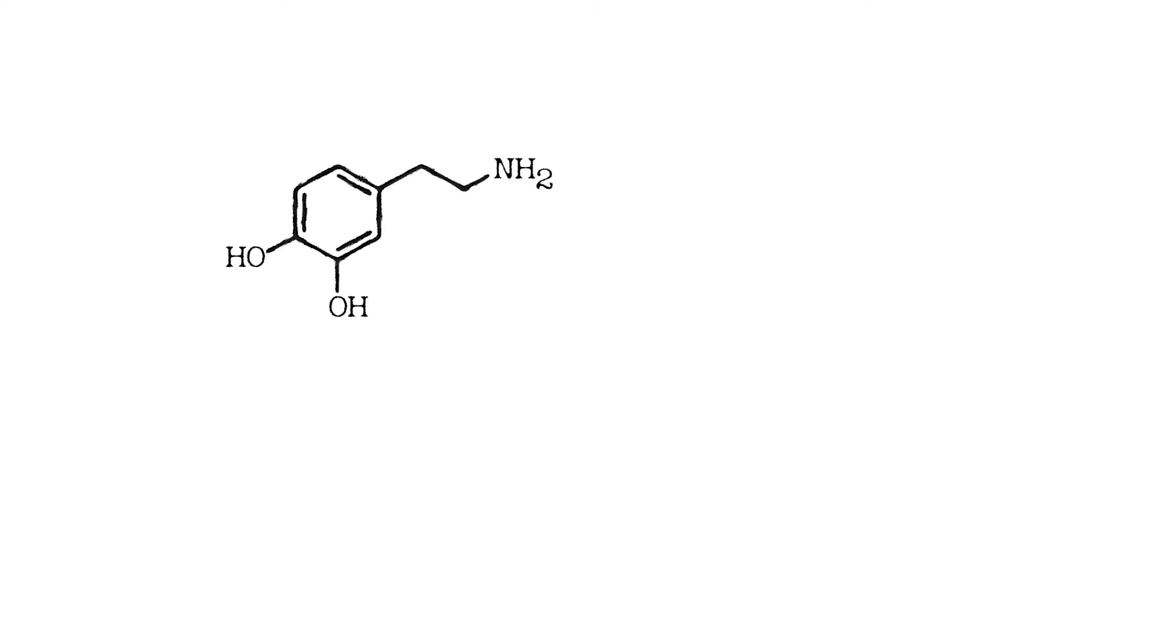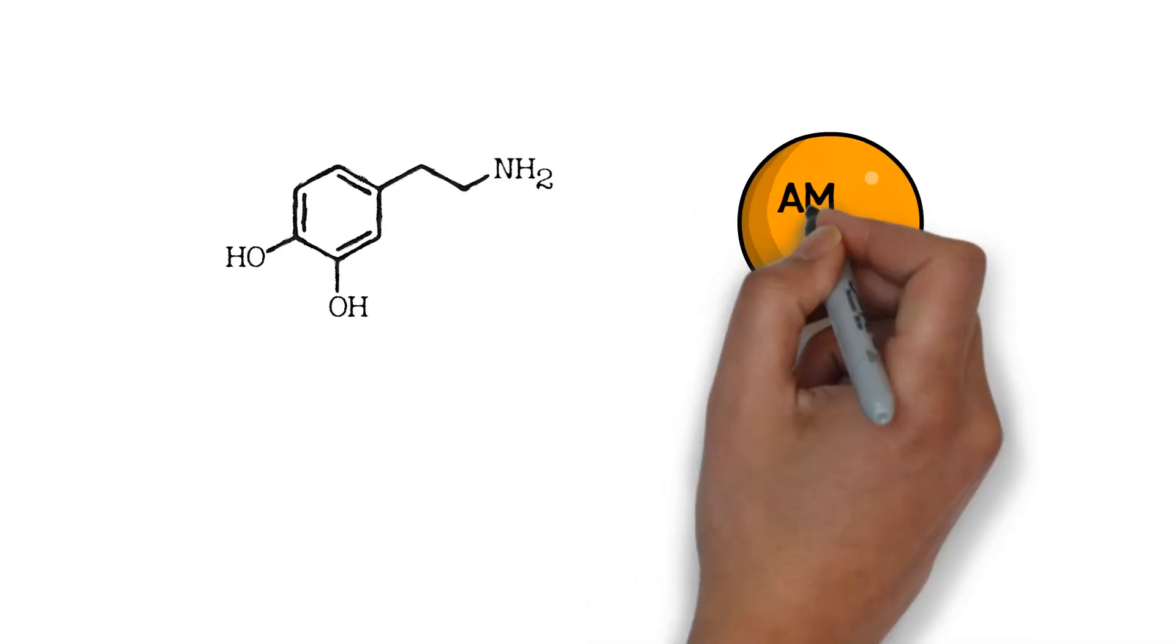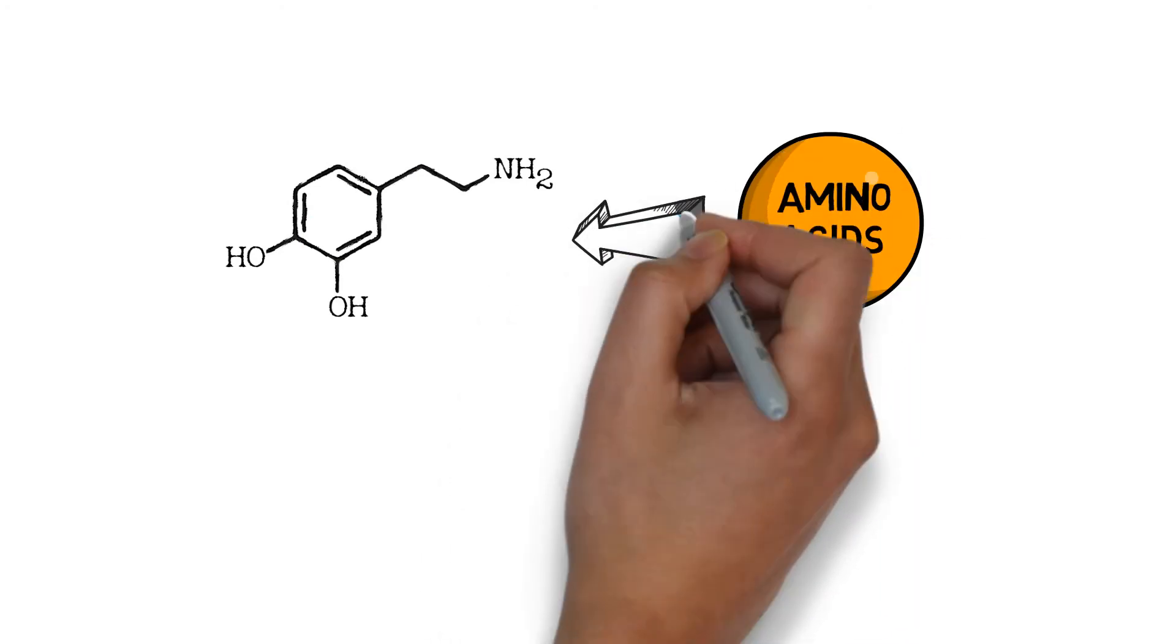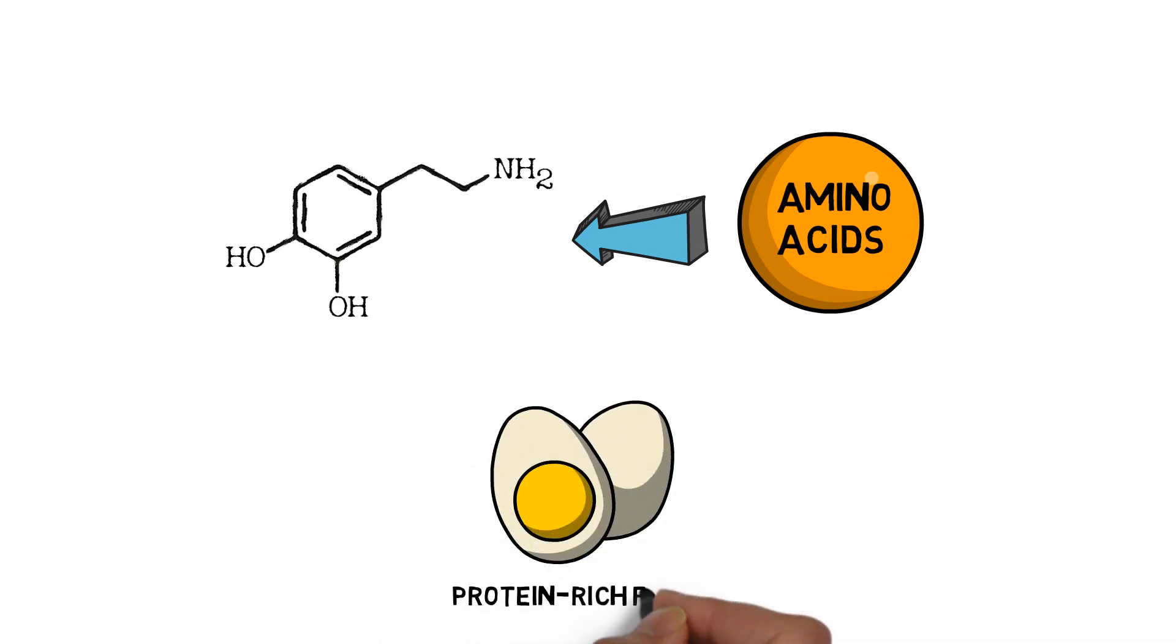Dopamine is produced from the amino acids tyrosine and phenylalanine, which can be obtained from protein-rich foods. There are also some natural methods to increase its level in the human body.